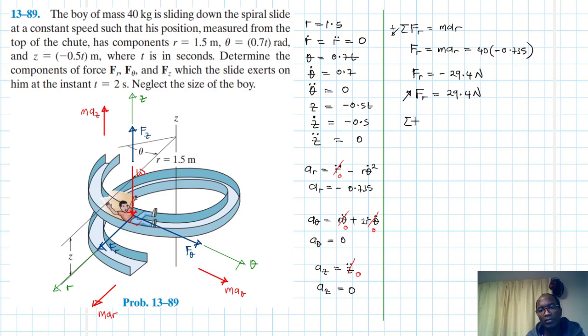We have summation of forces in the theta direction, and this is just equal to M A theta. So we do have the reaction in that direction, and this is equal to 40 times A theta. We found A theta is 0. Therefore, F theta is just equal to 0 Newtons.